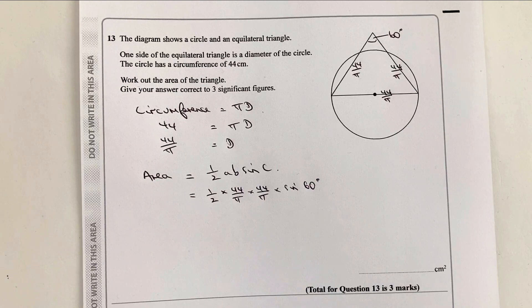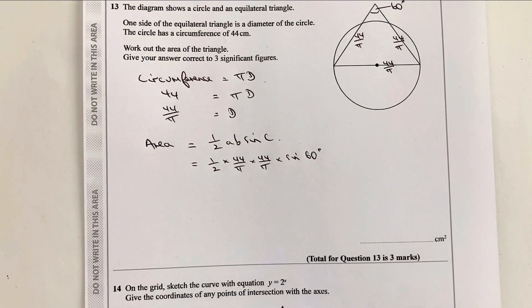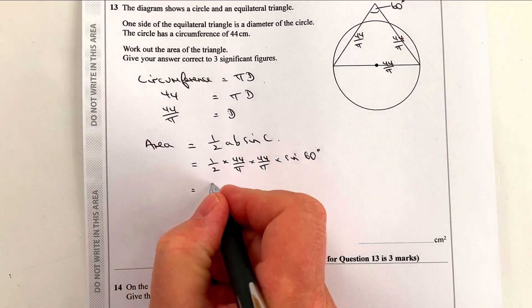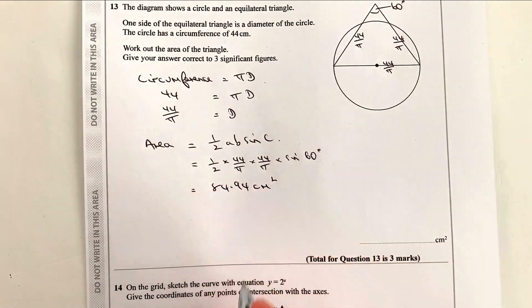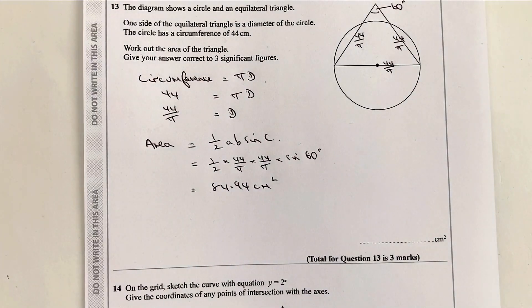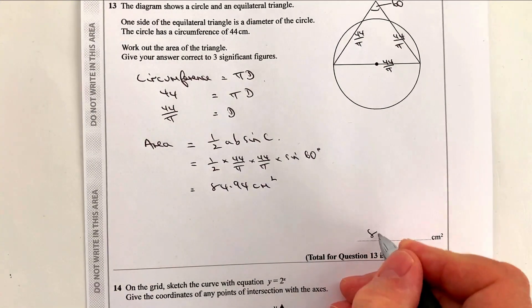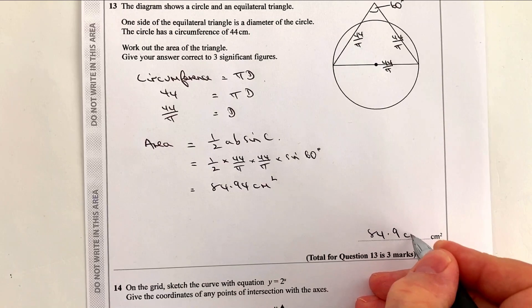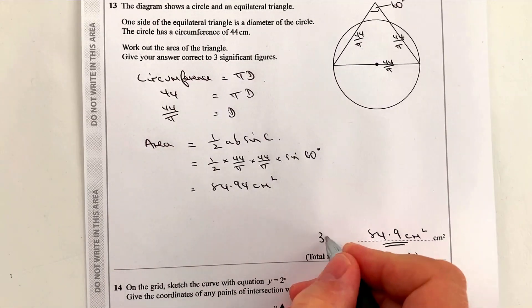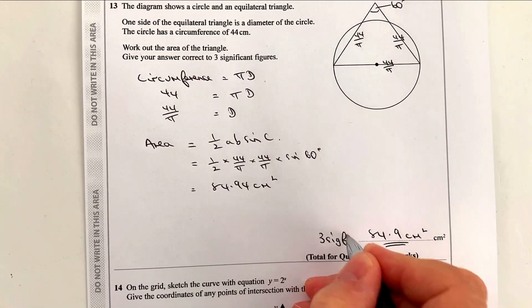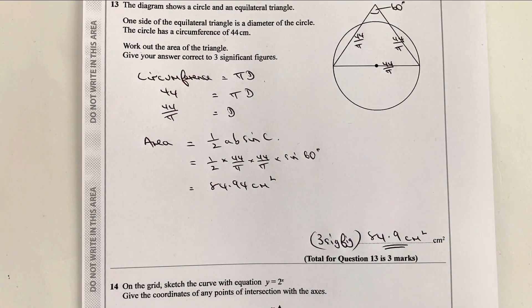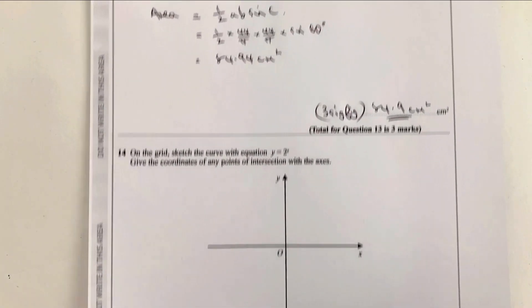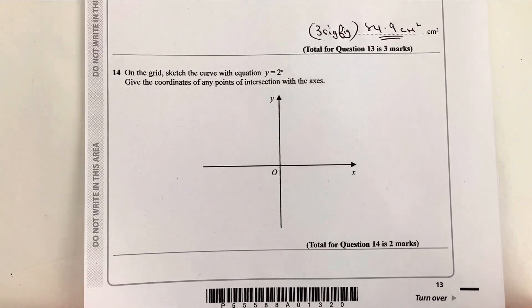It is a calculator paper. So if you pop that into your calculator, you're going to get an answer of 84.94 centimeters squared. And to three significant figures, which it does ask you for, is 84.9 centimeters squared. That's to three sig fig. A little bit of a tricky one to begin with, but hopefully that's all right for you.